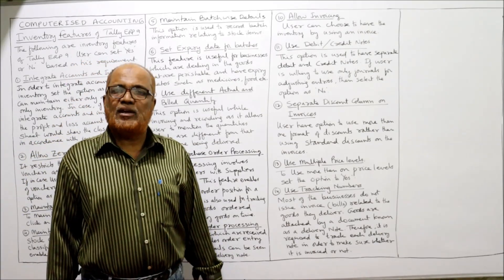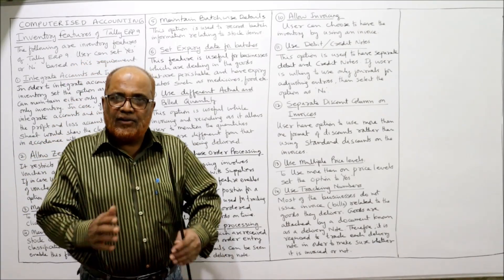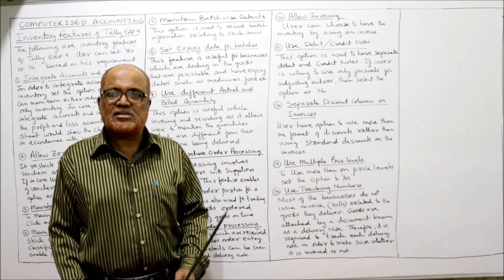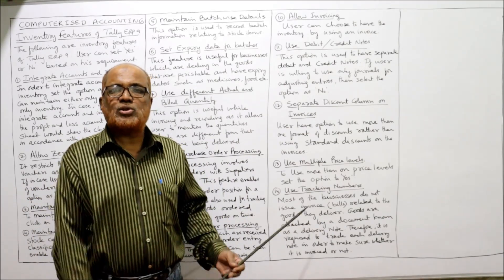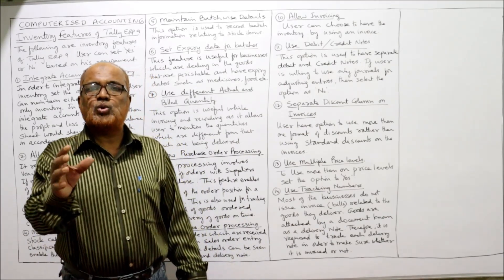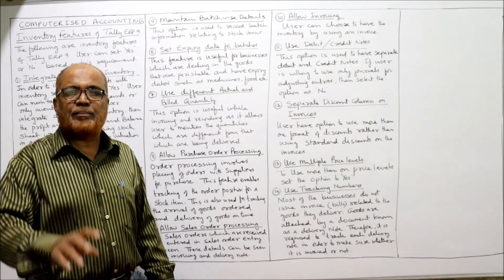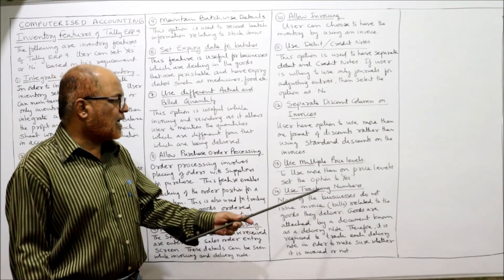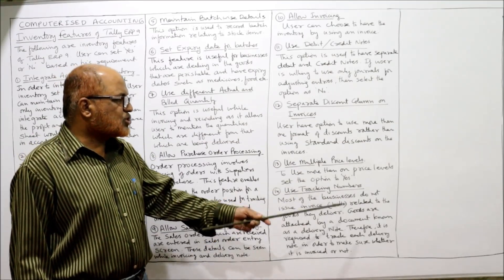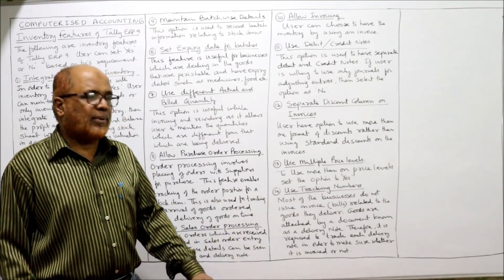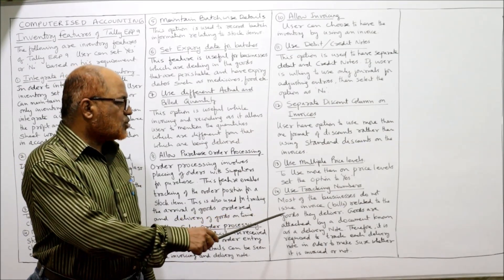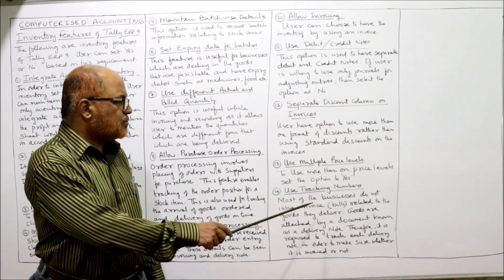The thirteenth feature is: use multiple price levels. The same price will not necessarily be applied on every invoice — different prices may be applied for different invoices. There is an option to enable whether different prices can be applied across invoices.